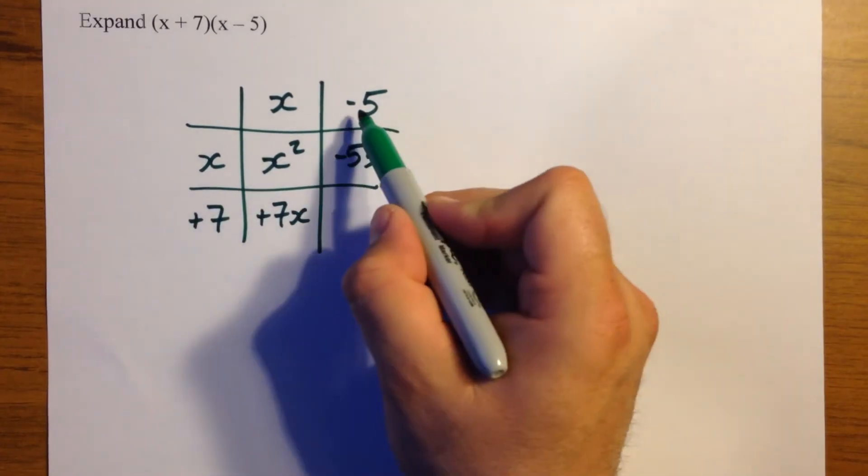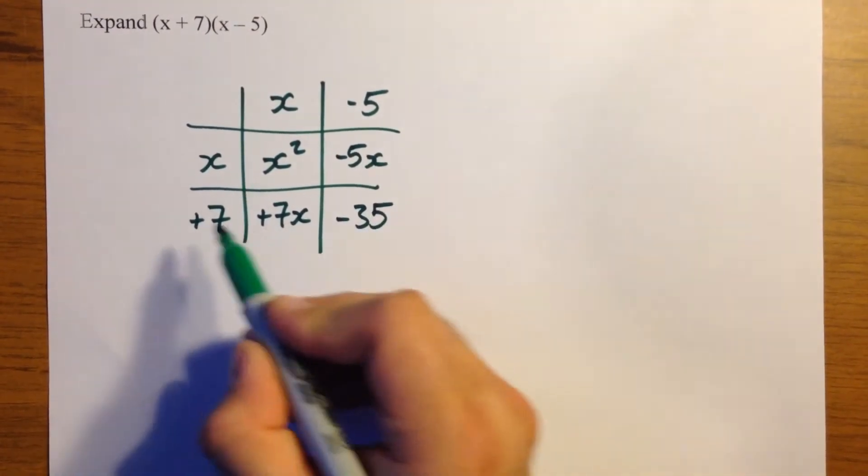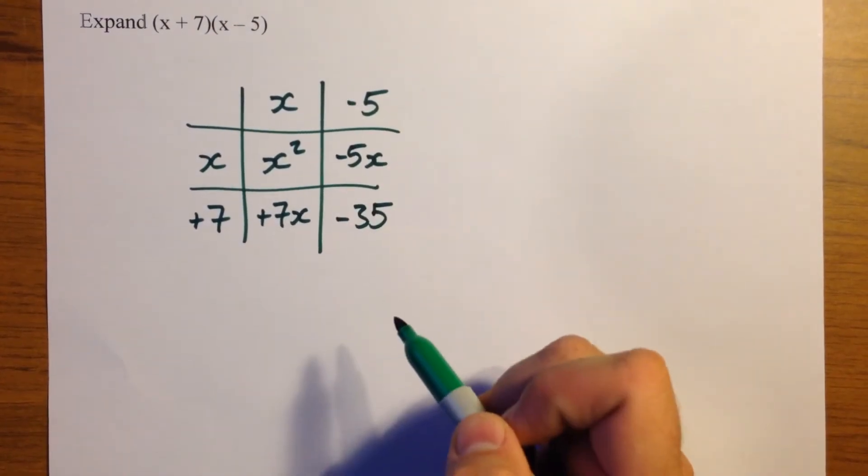and a positive 7 multiplied by negative 5 is negative 35 because a positive times a negative always makes a negative.